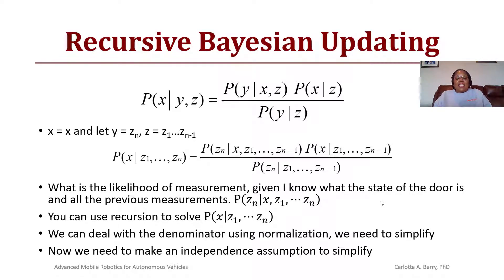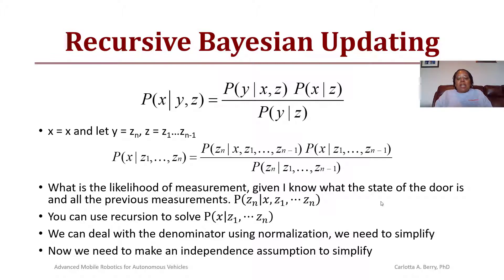This is called recursive Bayesian updating. We now have the probability of X given Y and additional information Z. Bayes' rule becomes: the probability of Y given X and Z is the probability of X given Z times the probability of Y given Z. Substituting, X is the door being open, Y equals Zn, and Z equals all other previous readings. So we can rewrite Bayes' rule as: P(X | Z1...Zn) = P(Zn | X, Z1...Zn-1) × P(X | Z1...Zn-1) / P(Zn | Z1...Zn-1).